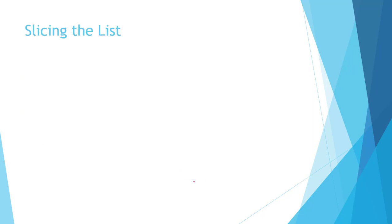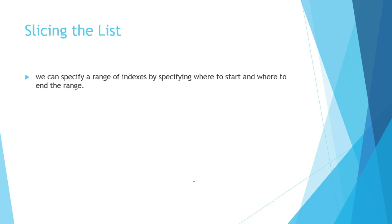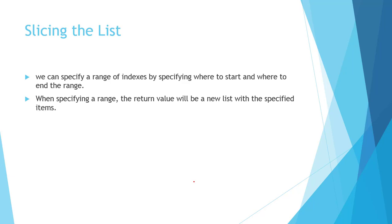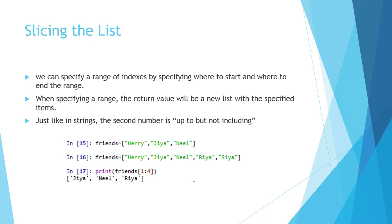Next, we will see slicing the list. Slicing means specifying a range of indexes. When specifying a range, the return value will be a new list with the specified items. Just like strings, the second number is up to but not including. Here, we have a list named 'friends'. If we slice from 1 to 4, index 4 is not included, so elements at indexes 1, 2, and 3 are printed — that is Jia, Nil, and Ria.